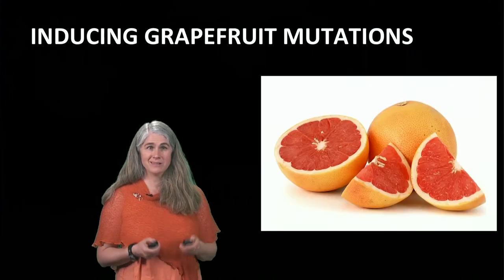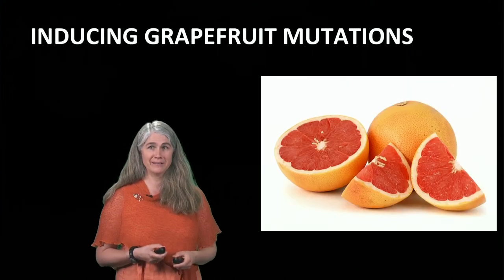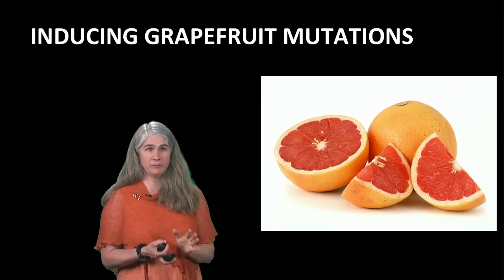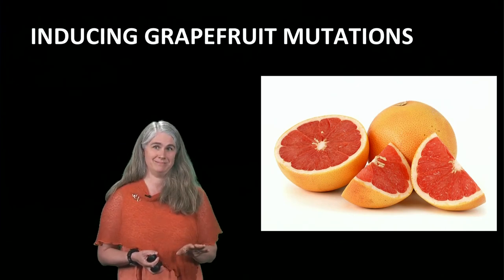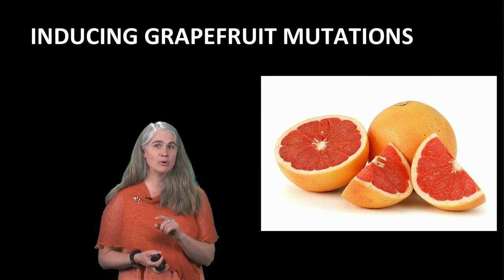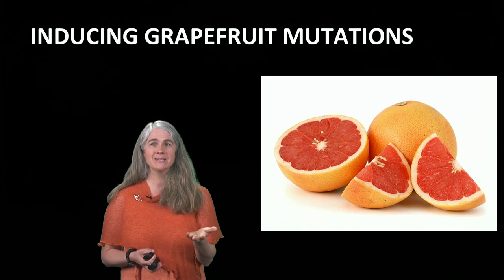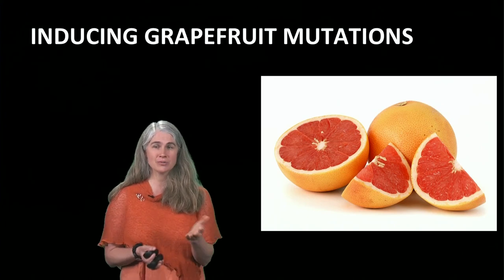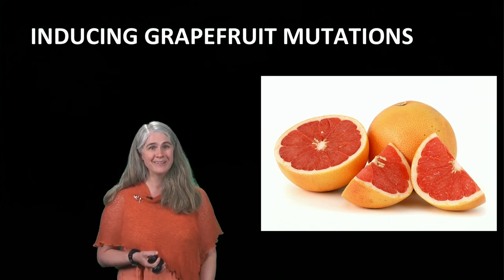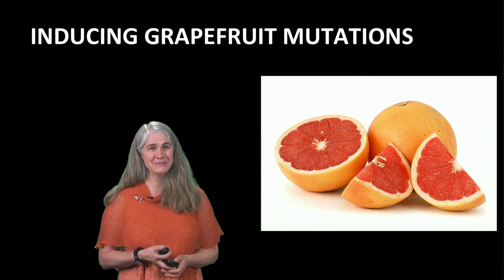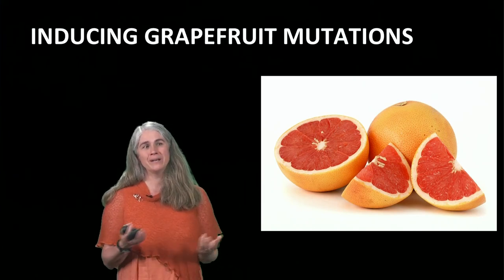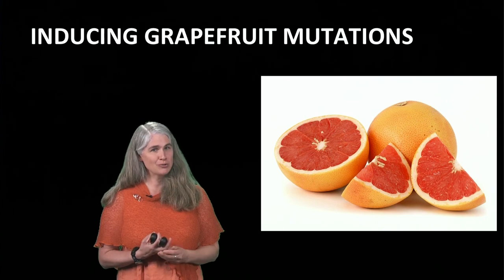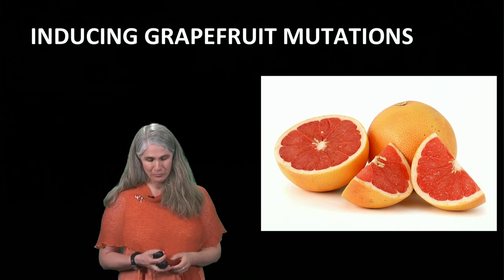In either case, they had to get to grapefruit-producing plants before they could even evaluate whether or not they had positive changes to work with. This takes a long time. The budwood was irradiated in 1963, but the new cultivar wasn't released to farmers and nurseries until 1984 — 20 years of development and testing to find the red genes we now associate with grapefruit.